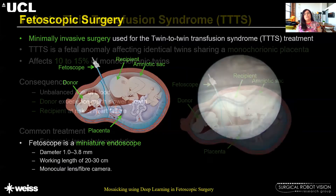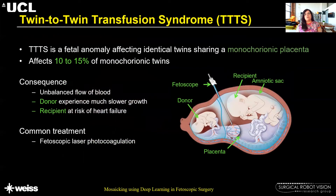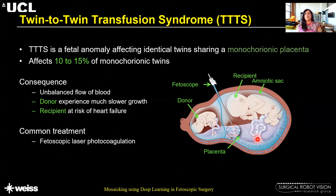Twin-to-twin transfusion syndrome is a fetal anomaly affecting identical twins sharing a monochorionic placenta. The flow of blood becomes uneven between the two fetuses — the donor experiences much slower growth while the recipient is at risk of heart failure due to the excess blood it receives. Fetoscopic laser photocoagulation is used for treating this condition.